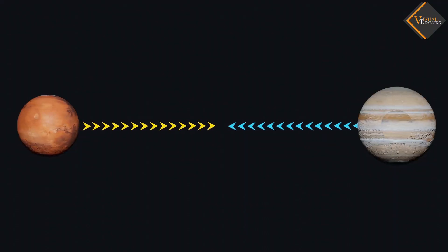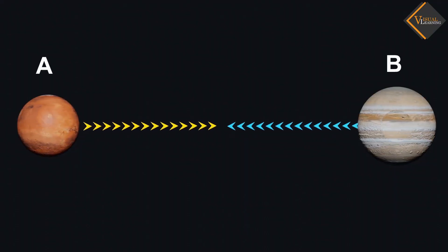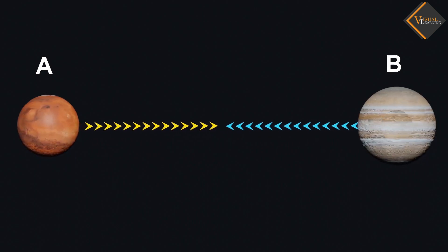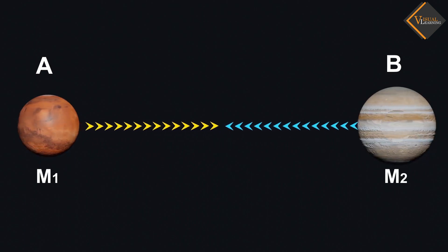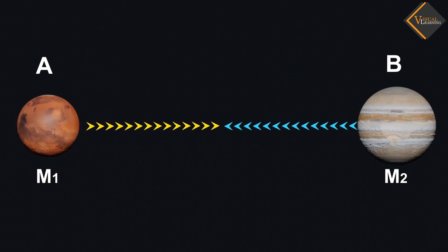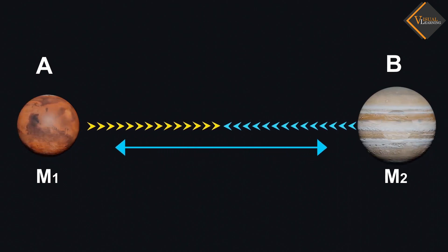Consider two bodies A and B. These two bodies have mass M1 and M2 respectively. The distance between these two bodies is D.